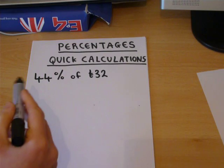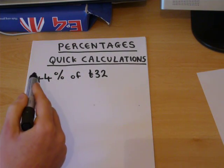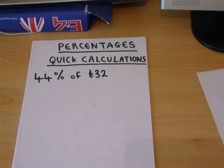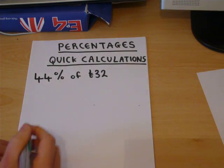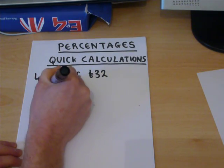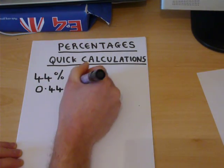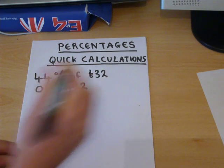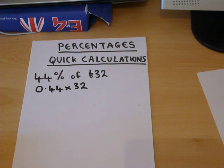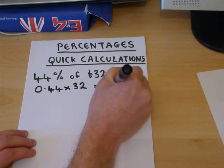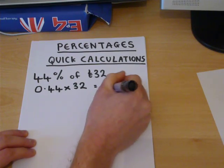You can find 10%, 1%, and from that find 44%. But a much quicker way on a calculator is to do 0.44 times by 32. 0.44 times 32 gives us 14 pounds and 8 pence.